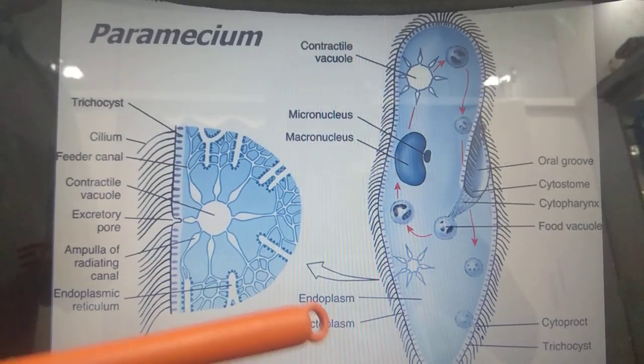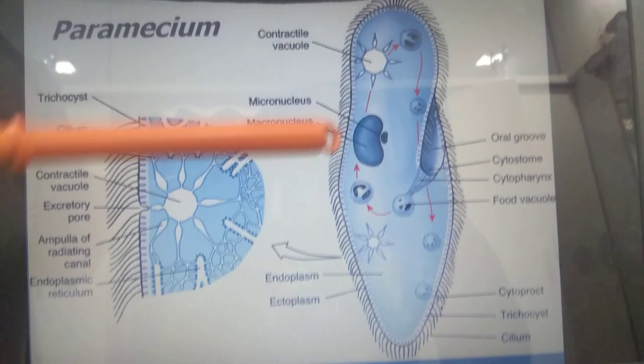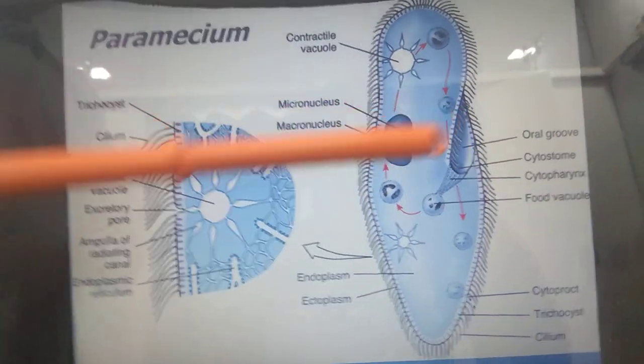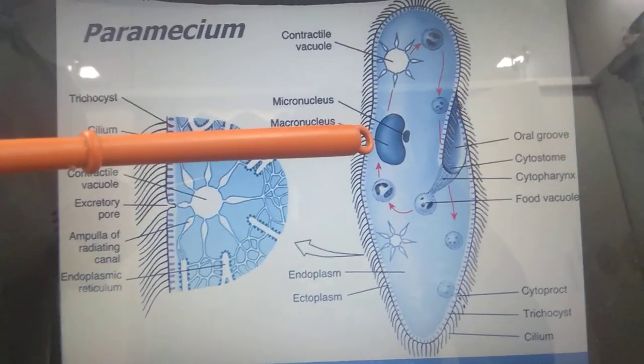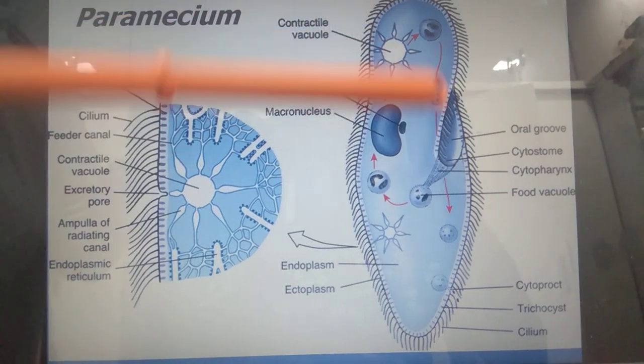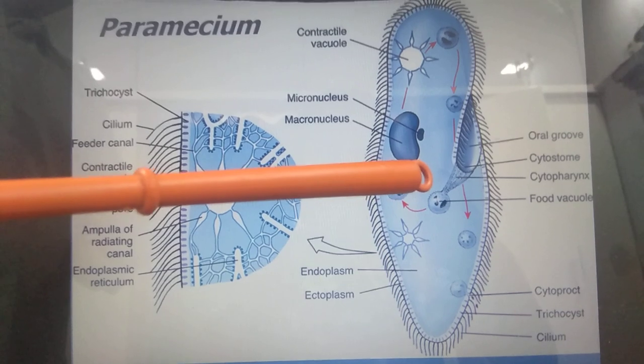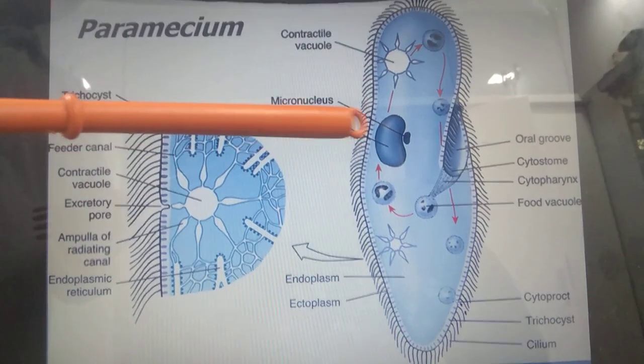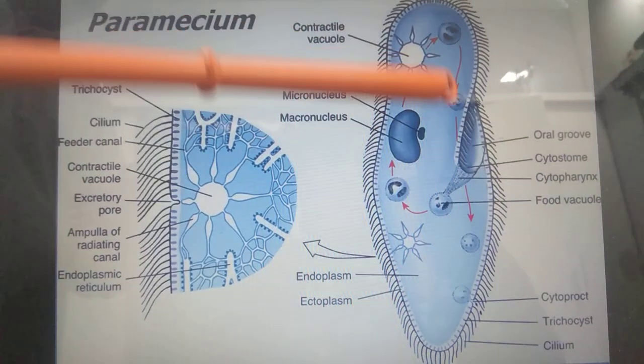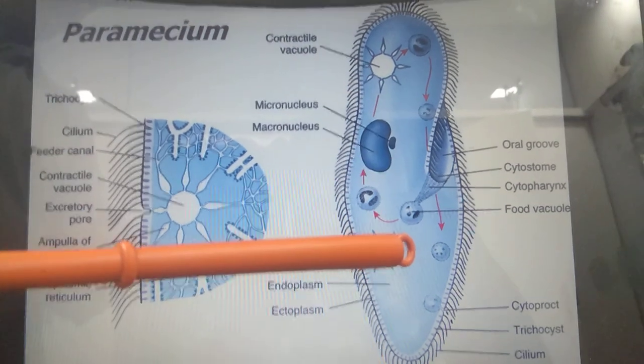Its body is covered by the pellicle, which is the outer limiting membrane of the paramecium. The paramecium is divided into two parts: the outer part is called ectoplasm, while the inner part is called endoplasm.